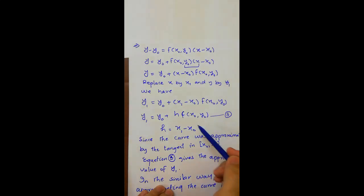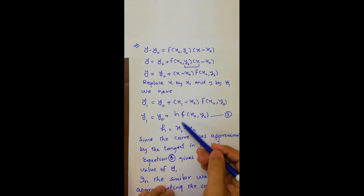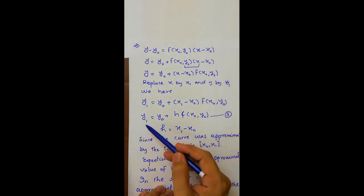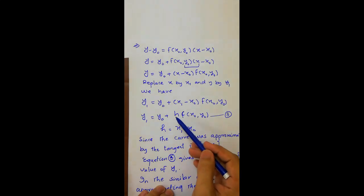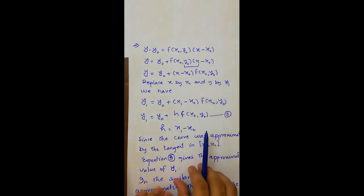We know that x1 minus x0 equals h. So we replace x1 minus x0 by h, and this equation becomes y1 equals y0 plus h f of x0, y0 as h equals x1 minus x0.